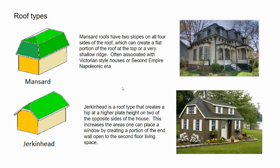A hip roof like this doesn't really allow you to put windows on the second floor gable side, so if there is second floor living space you might want to add windows there while keeping a hip roof look — that's what the jerkinhead does. It's more of a style element with a kind of Dutch look to it.